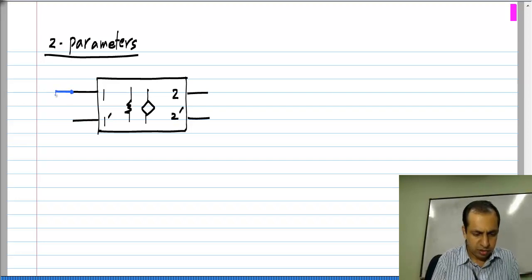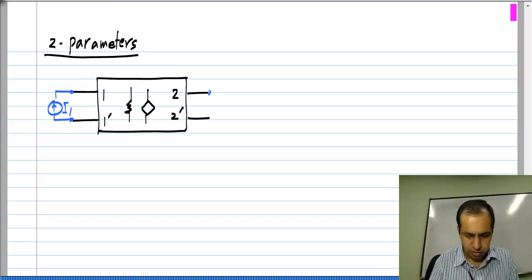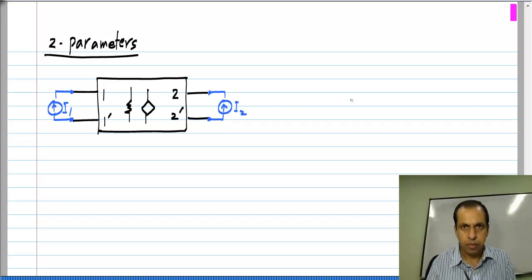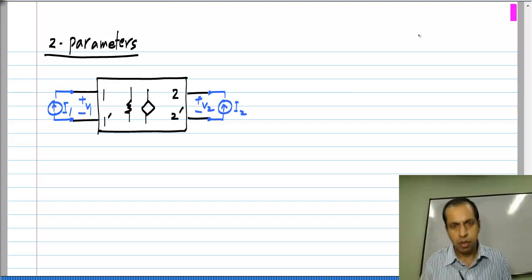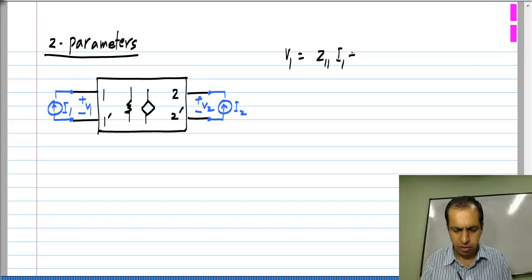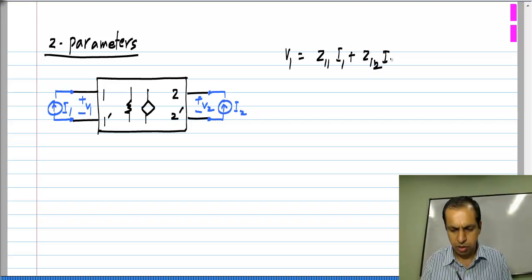We think of currents as independent variables. You apply I1 and I2 and measure V1 and V2. Of course, V1 and V2 will be linear combinations of the two independent sources in the circuit. V1 will be Z11*I1 plus Z12*I2, and V2 will be Z21*I1 plus Z22*I2.